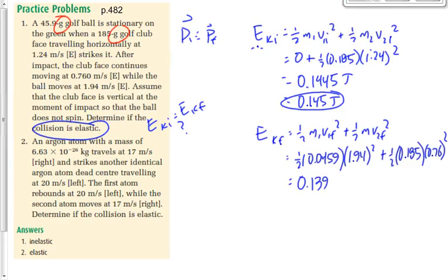0.139. So 0.140 for three digits. Elastic or inelastic? Inelastic, right? Kinetic energy is lost. Not a great deal of kinetic energy was lost - 0.05 joules. But it's still kinetic energy lost. To three significant digits, it's not the same number. So this is inelastic. Two objects bounce apart. The vast majority of the time, it's still going to be inelastic.